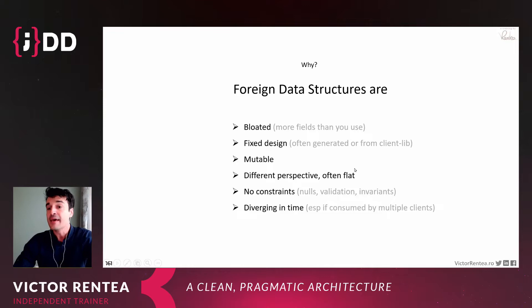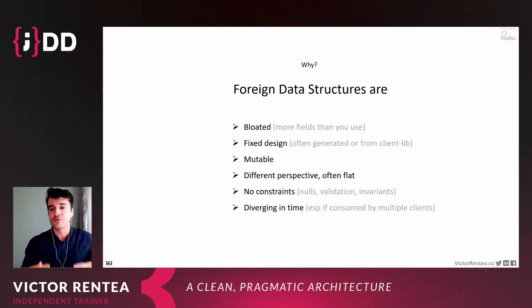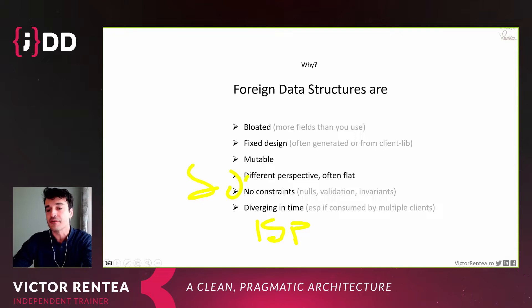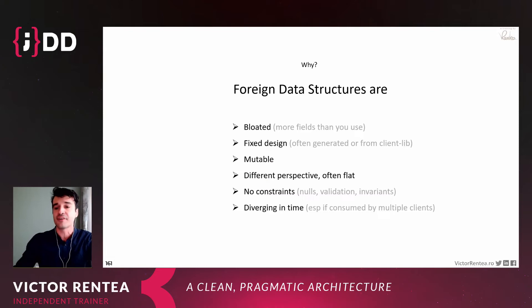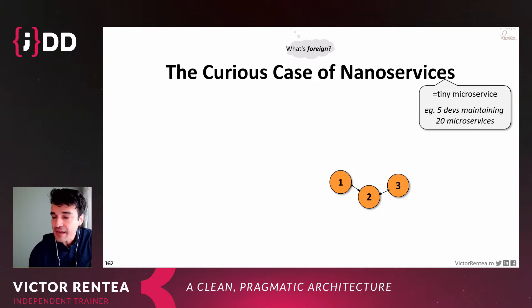Probably the most important point: DTOs will diverge over time. Even if at the start they look just like your internal structures, especially in a microservice ecosystem with multiple clients for the same API, DTOs will grow. You'll break the Interface Segregation Principle from SOLID, ending up using an interface consumed by multiple clients containing stuff used by other systems that you don't care about. DTOs will diverge if your ecosystem is successful.